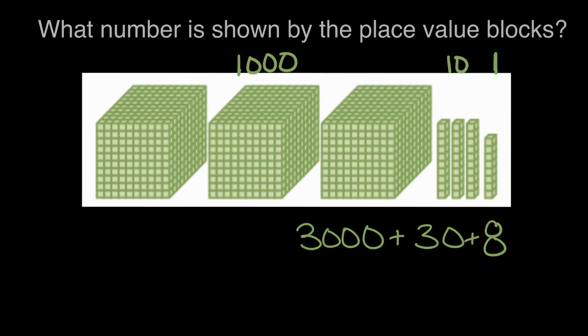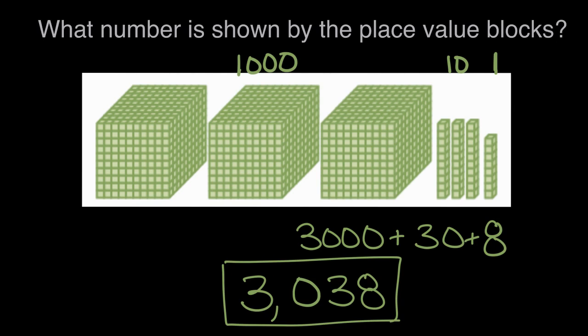So when we combine these numbers, we need to be careful to remember there are no hundreds. Our number will be 3,000, zero hundreds, and 38. 3,038 is the number represented by these place value blocks.